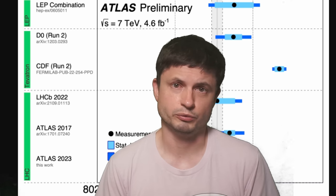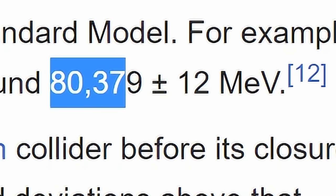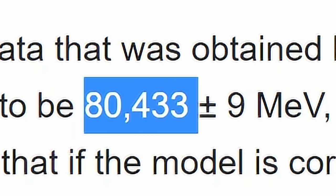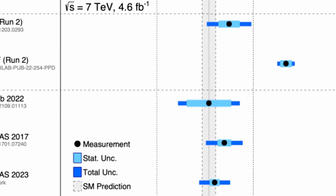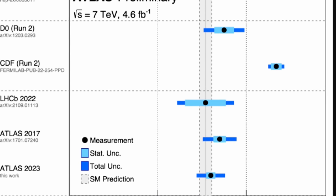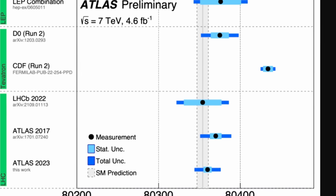And even though the actual difference was very minute, specifically 80.379 versus 80.433, because of the previously accurate observations from other experiments, this created a pretty big issue.